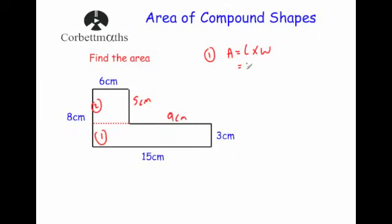So rectangle 1 is 15 times 3, which equals 45 centimeters squared.